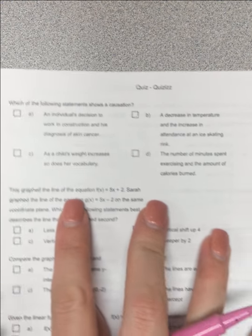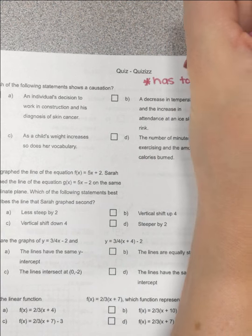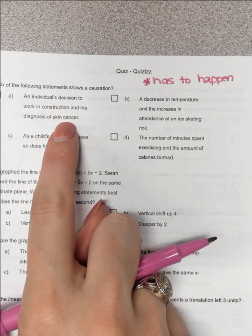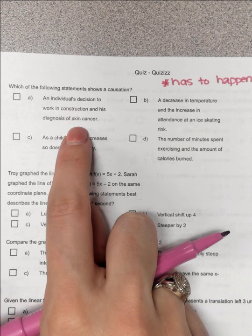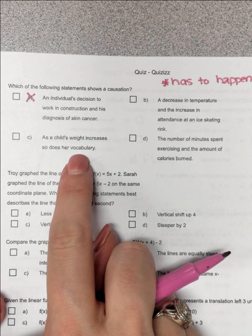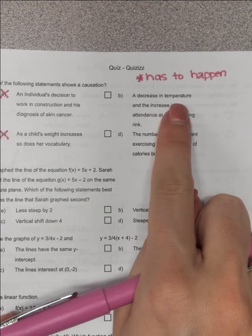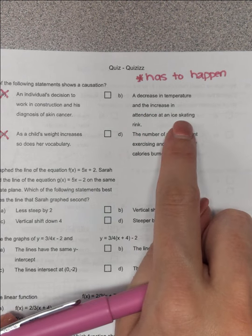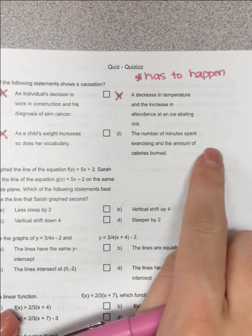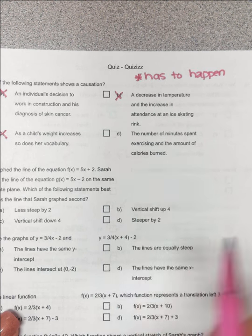So which of these shows a causation? Which one does have to happen? An individual's decision to work in construction and his diagnosis of skin cancer. If you work in construction, do you have to get skin cancer? No. Child's weight increases and so does her vocabulary. No. Temperature, a decrease in temperature and the increase in attendance of an ice skating rink. No, just because it gets hotter doesn't mean you have to attend an ice skating rink. Number of minutes spent exercising and the amount of calories burned. The more you exercise, you have to burn more calories. That is true.